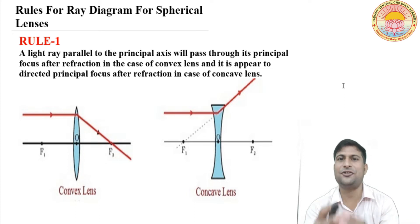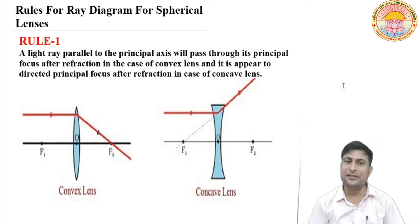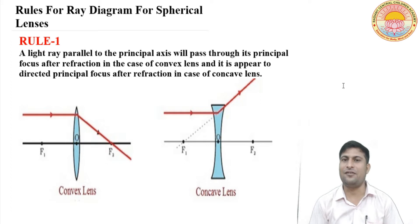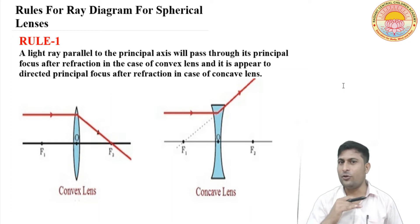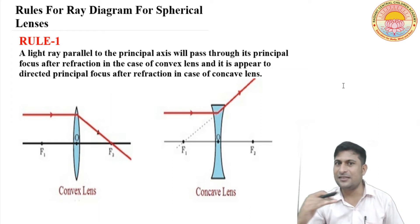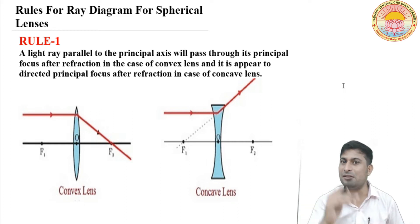After refraction in the case of convex lens, it will appear to be directed towards the principal focus after refraction in the case of concave lens. Friends, pahla rule aapka kya hai? First rule: spherical lens ke case mein, agar koi light ray principal axis ke parallel aaye, then after refraction it will pass through the principal focus of the convex lens.